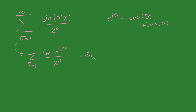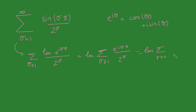We can factor the imaginary part out, giving us the imaginary part of the sum from sigma equals 1 to infinity of e to the i sigma x over 2 to the sigma. We can strip out the sigma from top and bottom, so this becomes the imaginary part of the sum from sigma equals 1 to infinity of e to the ix over 2, all to the power of sigma.